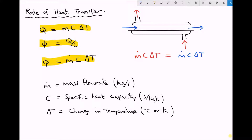However, that assumes the heat exchange is 100% efficient. In reality, it's unlikely to be 100% efficient, so not all of the heat energy given up by the hot fluid will actually make its way into the cold fluid. Let's say for argument's sake we had an efficiency of 50% — only half of the heat energy lost by the hot fluid would make its way into the cold fluid. When working with efficiencies we need to express them as a decimal, so 50% becomes 0.5.